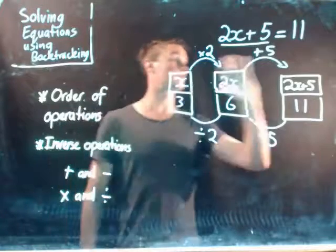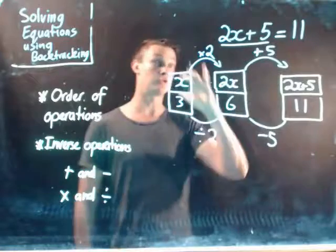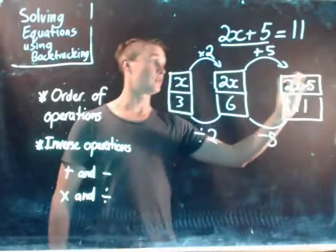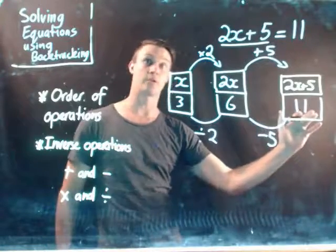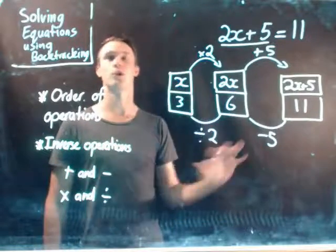So what you do with backtracking, you create a flowchart at the top, you multiply by 2, you add 5, etc. You create each step by step. You then have your RHS, or your answer on the bottom right, and then you go backwards to get your answer for x.